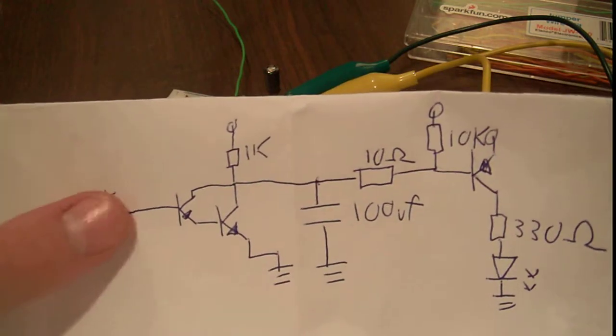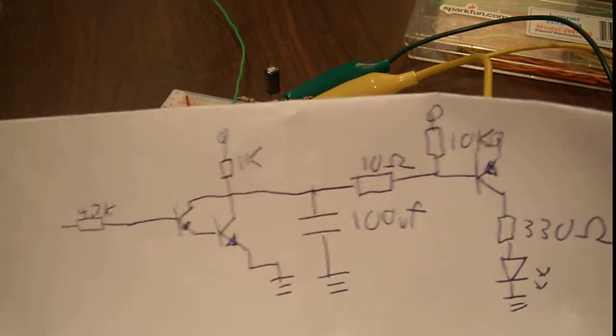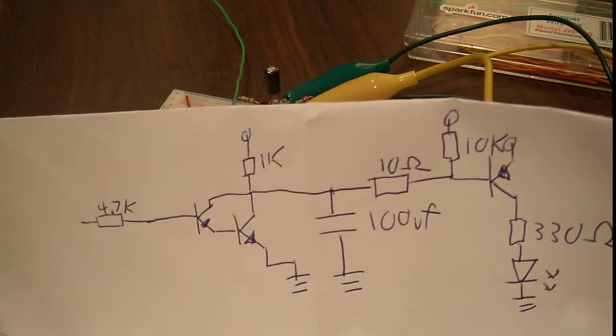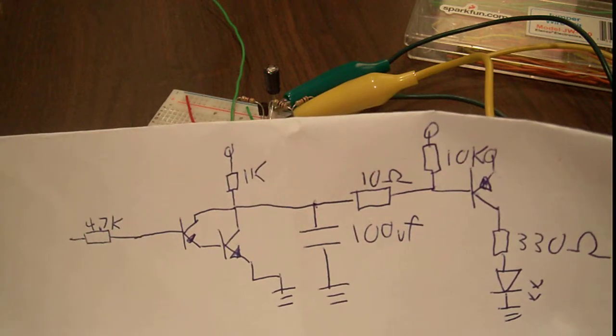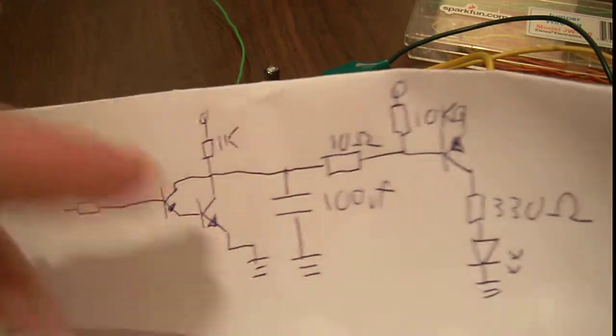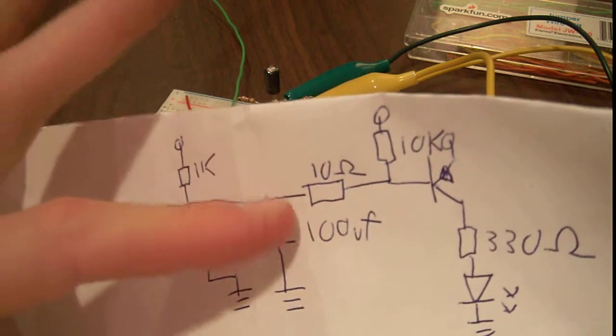It goes through a 4.7 kiloohm resistor to a Darlington configuration, which has the collectors pulled high through 1K. The emitters are grounded. I'll just explain the schematic, and then I'll later explain how it works. So then you have a 100 microfarad capacitor. It acts like a smoothing capacitor.